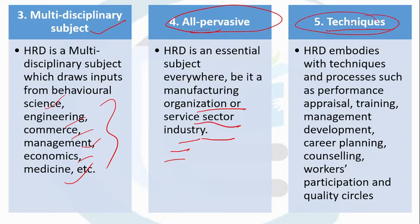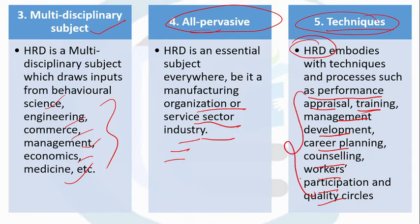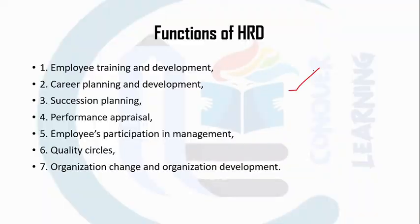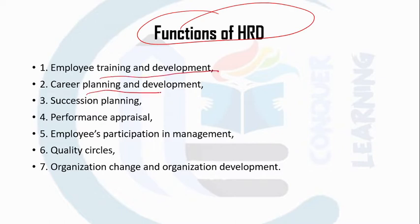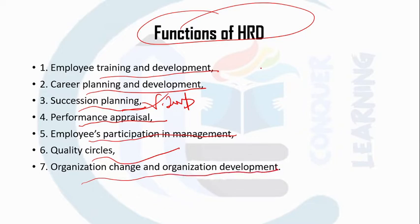There are a number of HRD interventions and techniques which help in developing the HRD environment or culture. These include performance appraisal, training, management development, career planning, counseling, workers' participation, and quality circles. These are all techniques of human resource development that can be used for developing human resources, which we will study in detail in coming sessions. Functions of HRD include employee training and development, career planning and development, succession planning — a very important terminology we will study in coming slides — performance appraisal, employee participation, quality circle, and organizational change and organizational development.